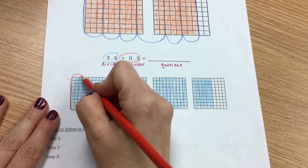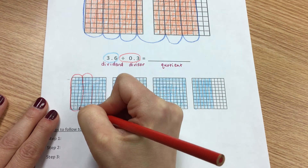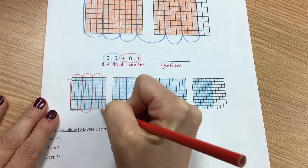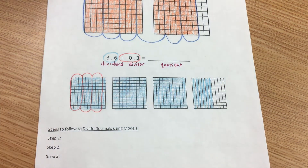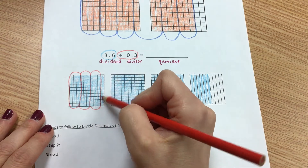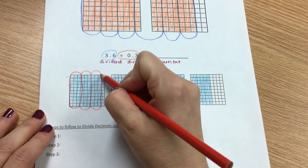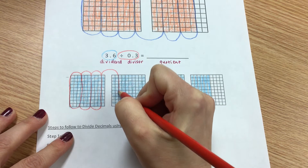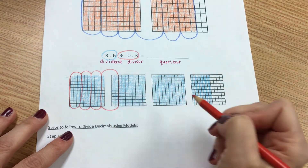1, 2, 3. 1, 2, 3. 1, 2, 3. So I'm running into the same problem as in the first problem — I have 1 tenth by itself, but that's okay. We can skip to the other side and borrow from this whole.